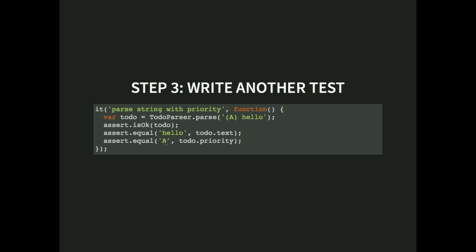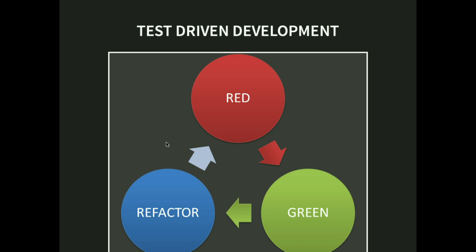You get this red-green-refactor loop: failing test, fix it, then refactor and improve things. When you want to introduce a new feature, you write a new test (make it red), get it green again, and refactor. That's the ideal world of unit testing. It's a really nice way to develop because you never leave the scope of your current work. You can just run the tests and get immediate feedback — not one millisecond, but below 100 milliseconds — so you never get distracted.